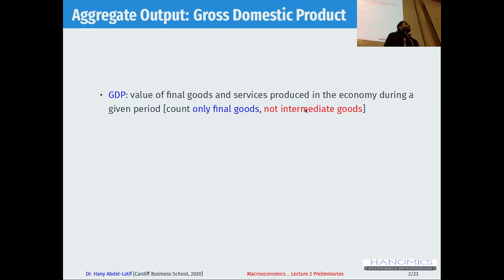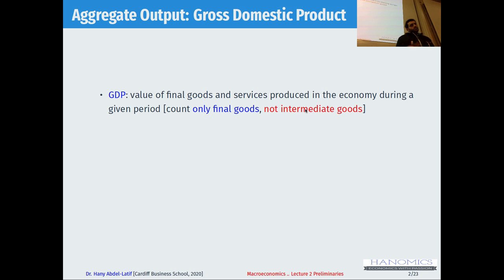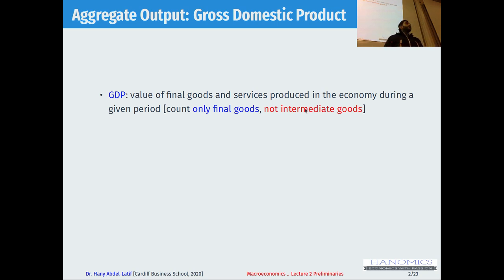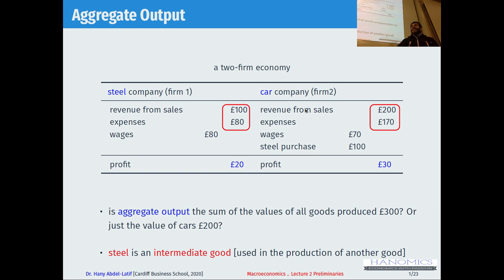That takes us to the formal definition of what GDP is. It's the value of final goods and services produced in an economy during a given period, usually a year. That means we only count final goods — we exclude intermediate goods, which are goods that have been used in producing other goods. So we're looking only at cars because we know steel is part of the car; it's an intermediate good, so we don't count it.